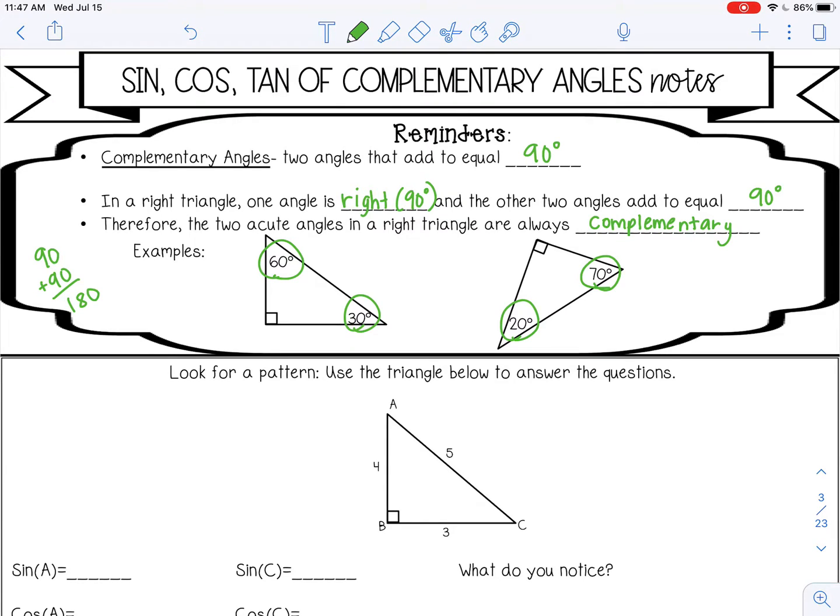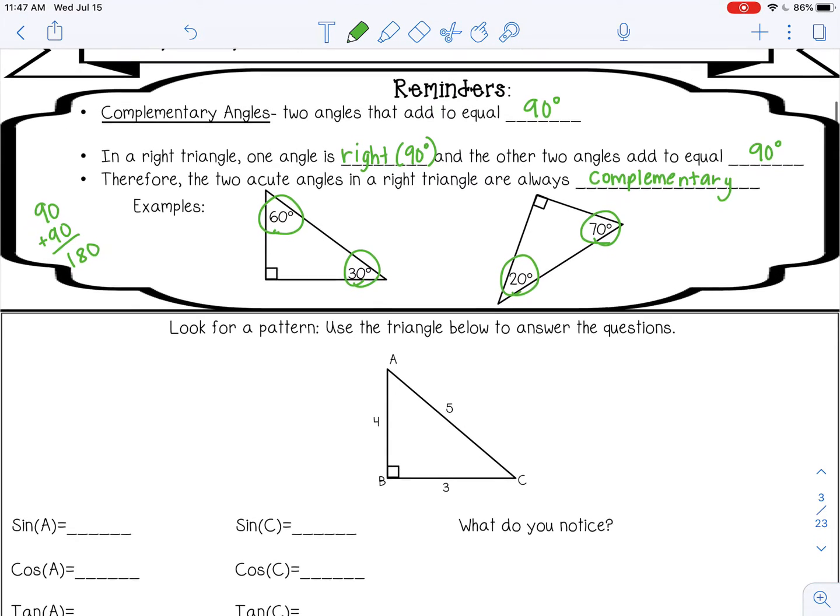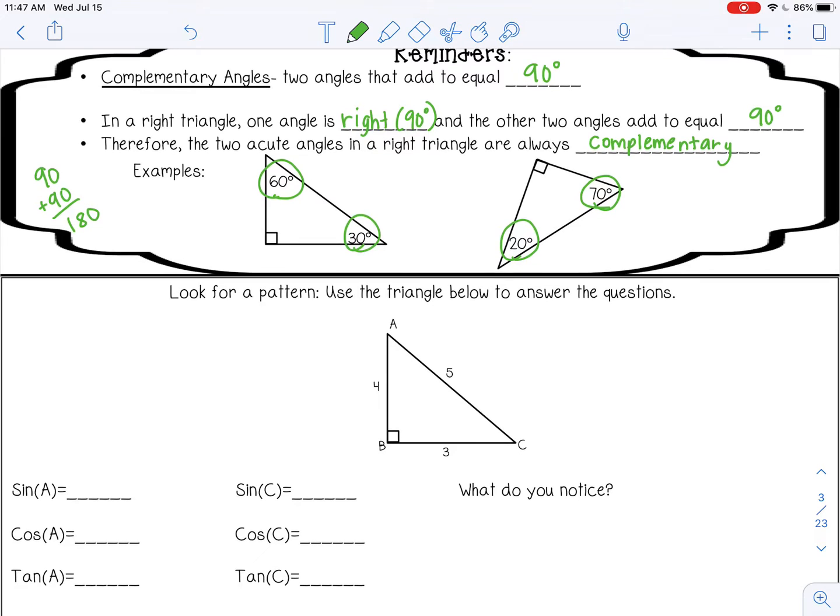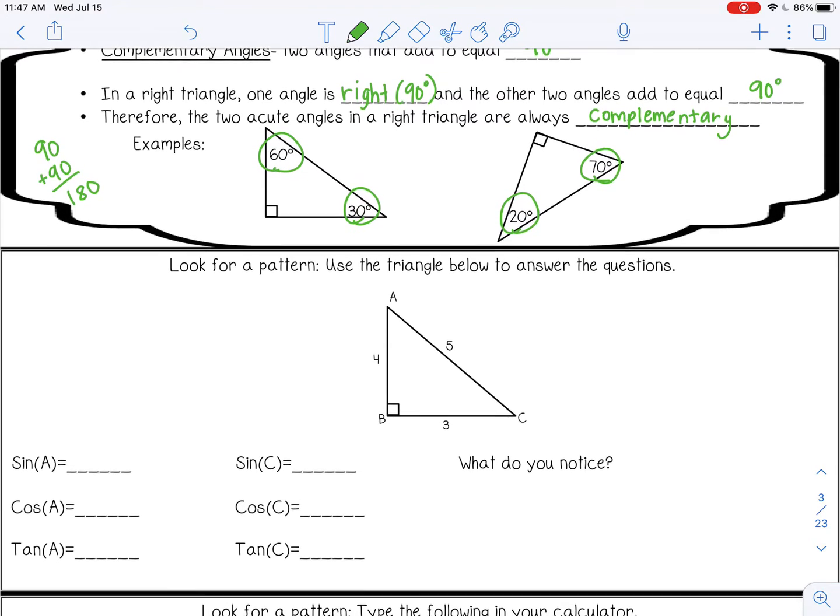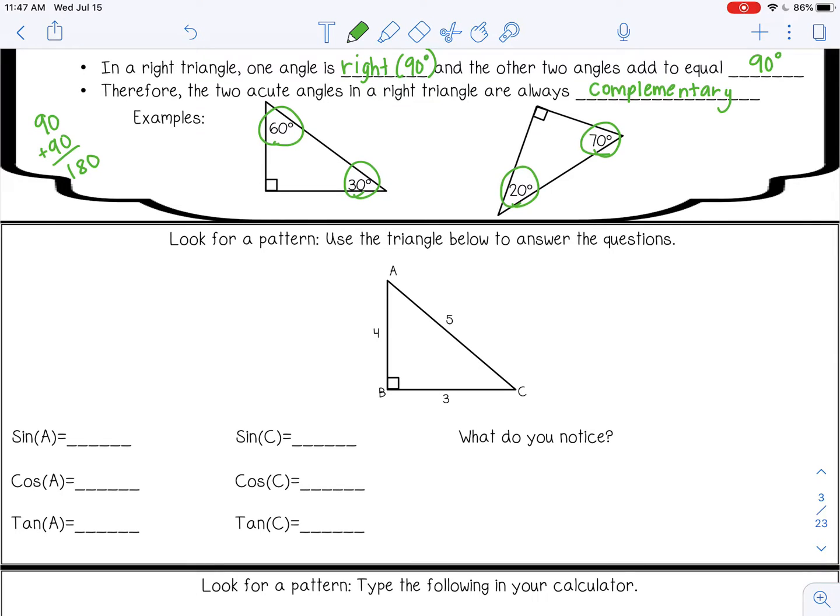Okay, so in the next example, it says look for a pattern. Use the triangle below to answer the questions. So this is what we went over in the previous lesson. We are finding the ratios of the sides for sine, cosine, and tangent for this triangle. So the sine of angle A. Remember, sine. Let's write our saying, SOH-CAH-TOA.